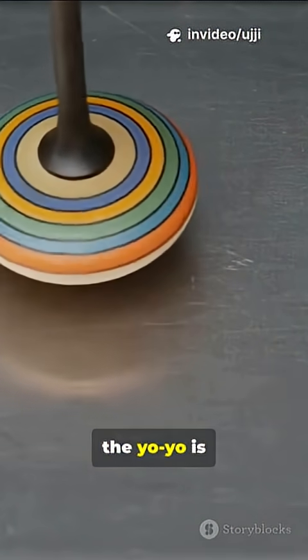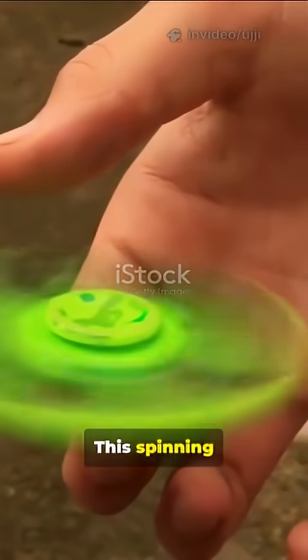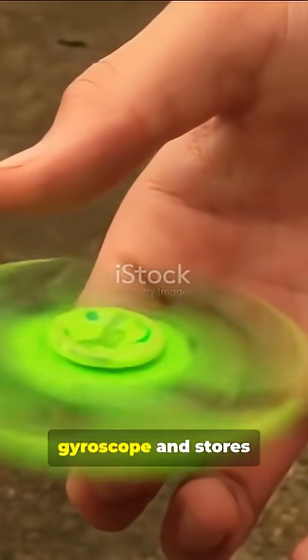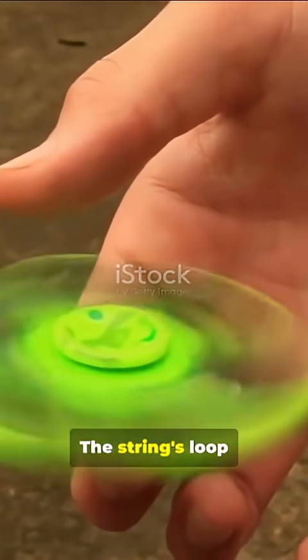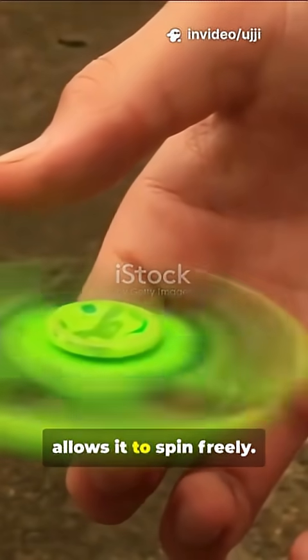At the bottom of the string, the yo-yo is spinning fast. This spinning motion keeps it stable like a gyroscope and stores kinetic energy in the rotation. The string's loop around the axle allows it to spin freely.